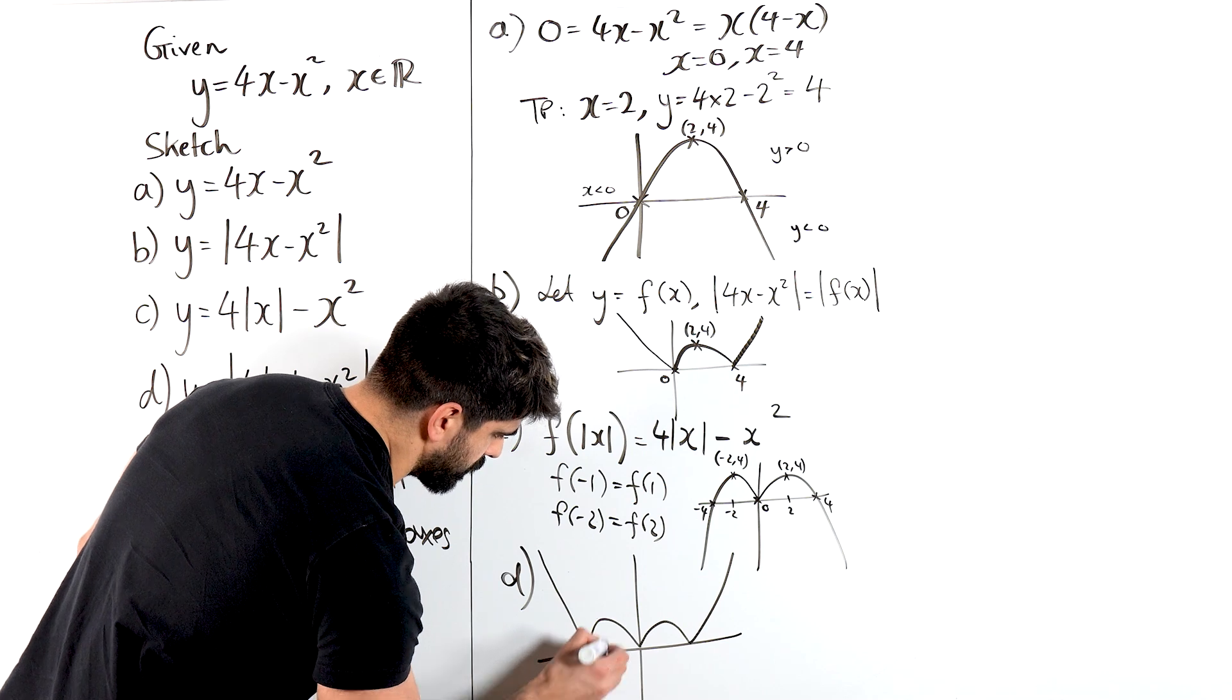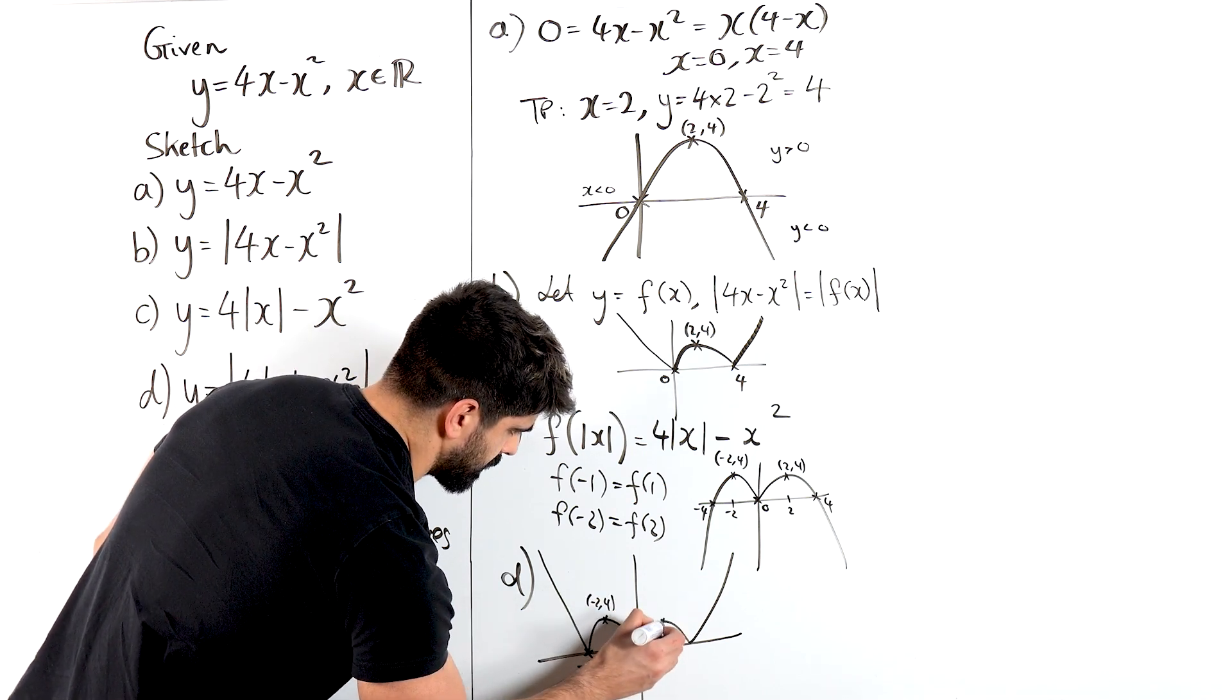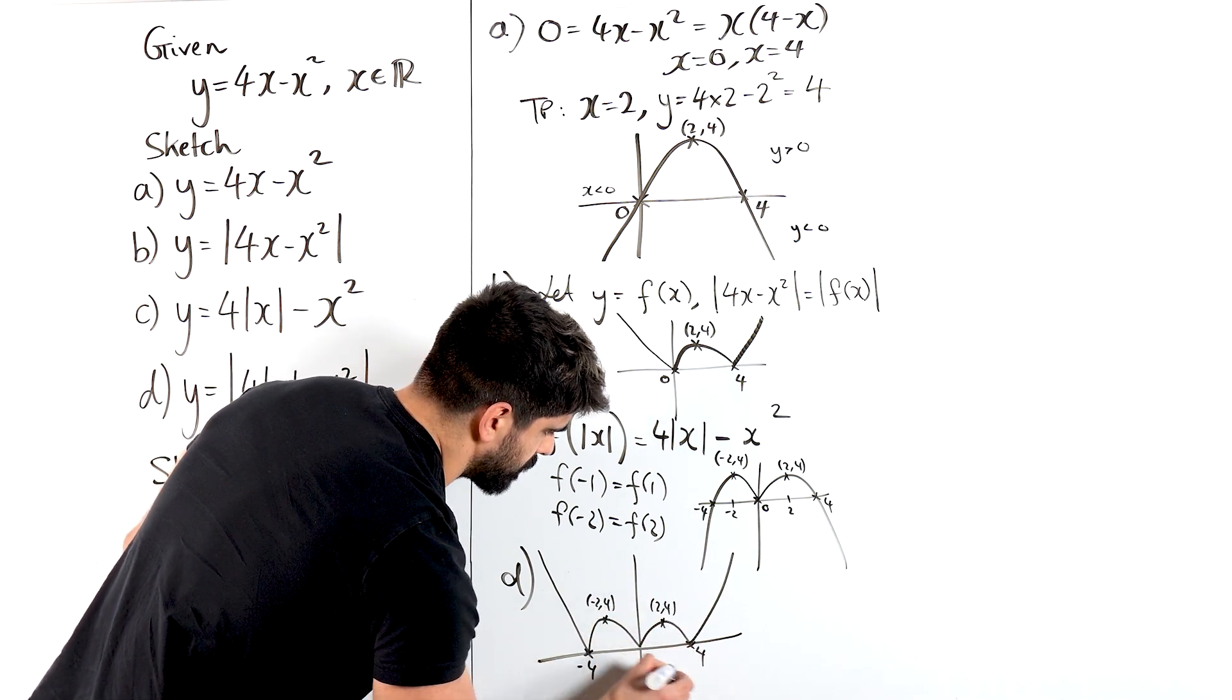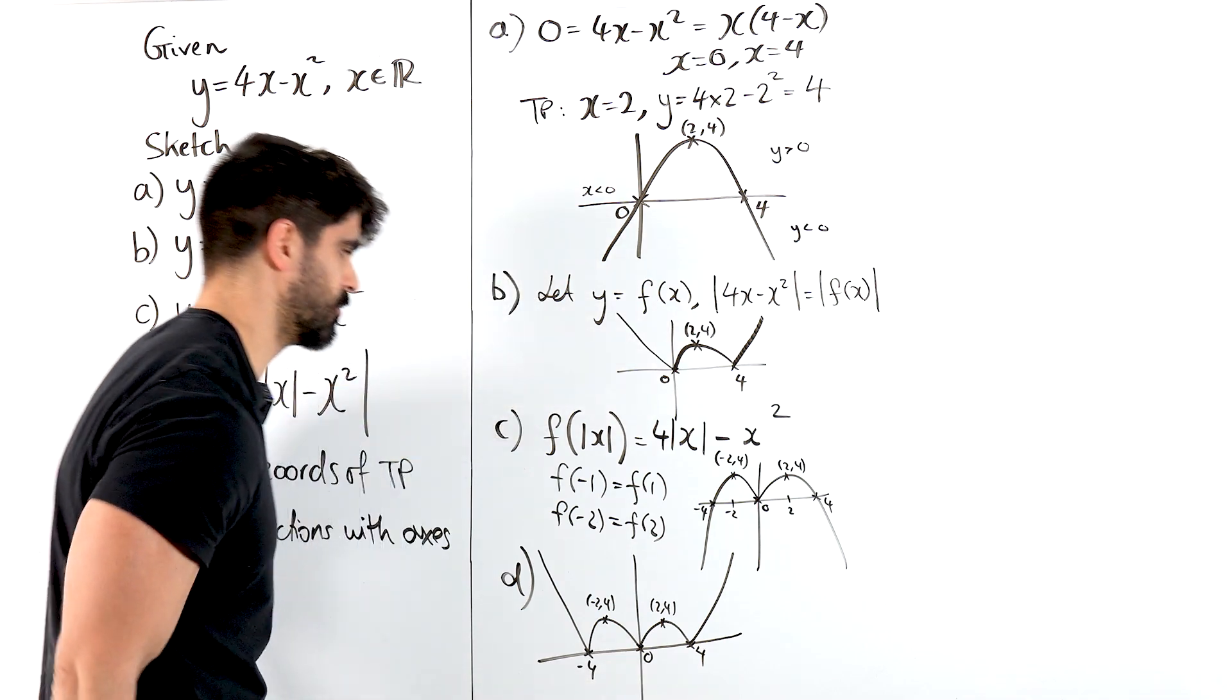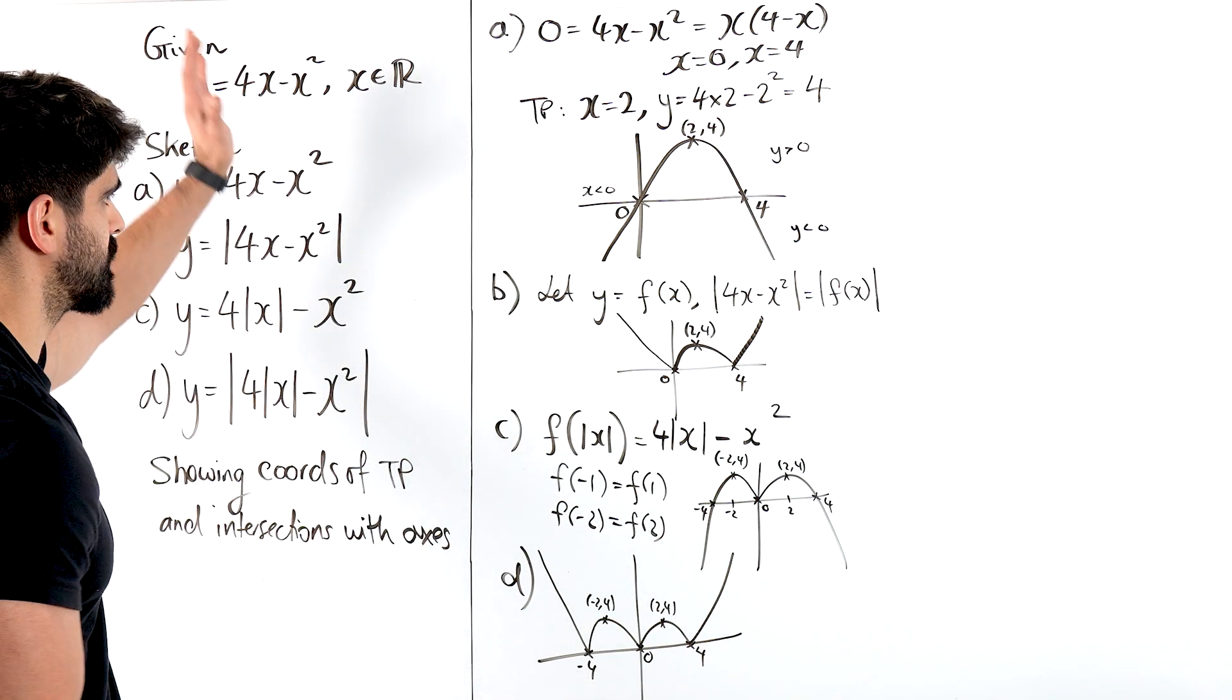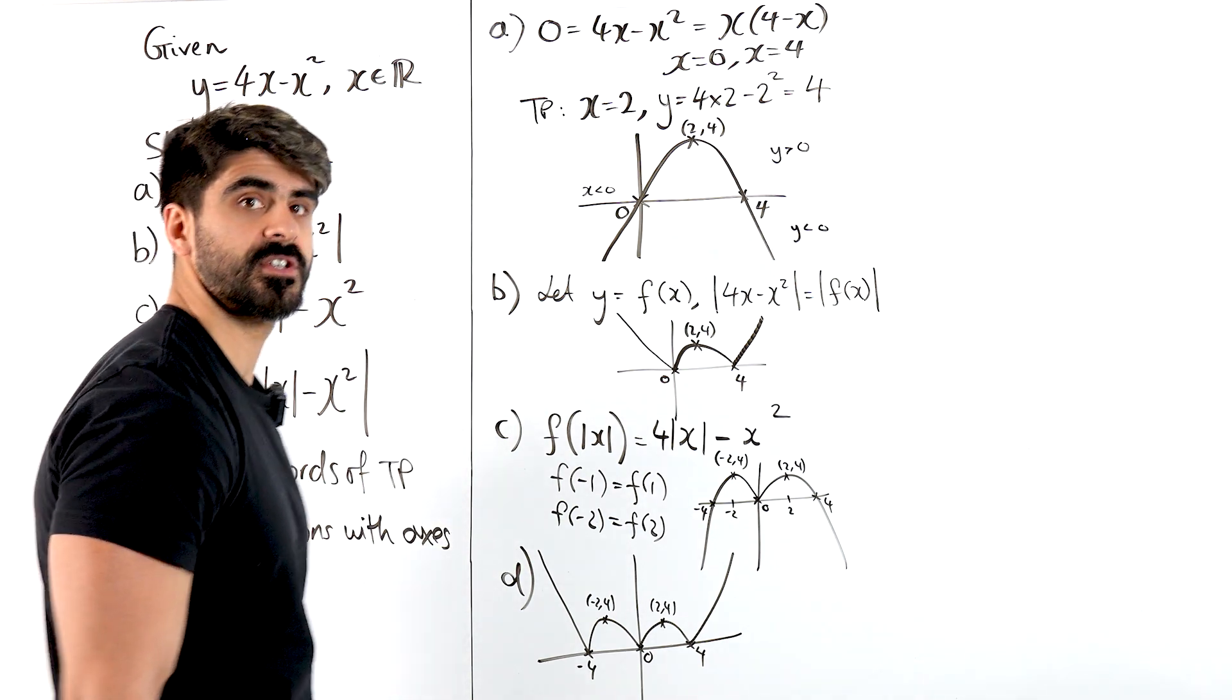This is still my minus 4. This here is minus 2, 4. Here is still 2, 4. And here we have 4, and that is 0. And that looks good to me. And these are all the different types of transformations specifically to do with modulus that they can ask in your exam.